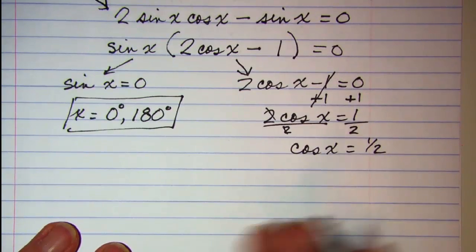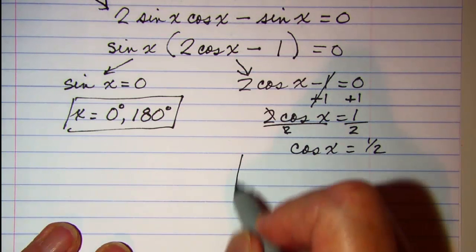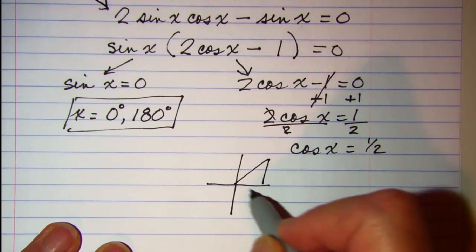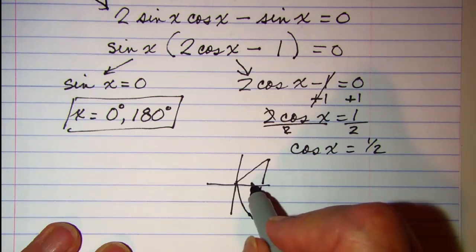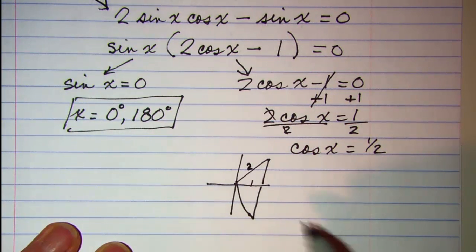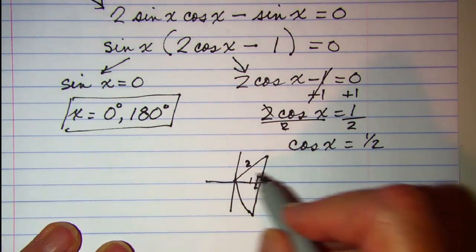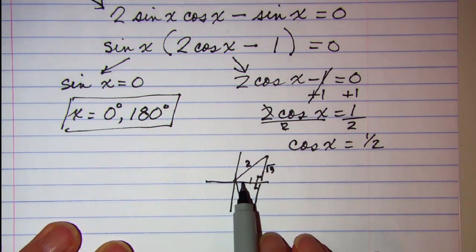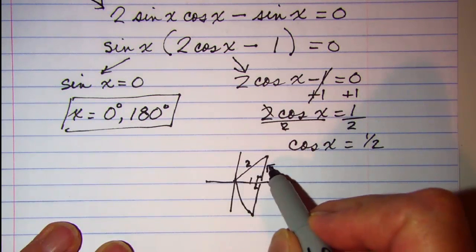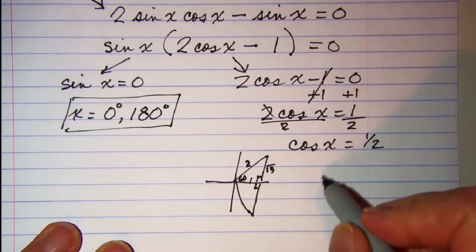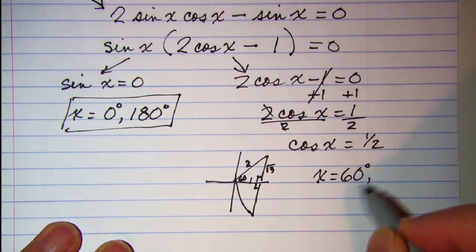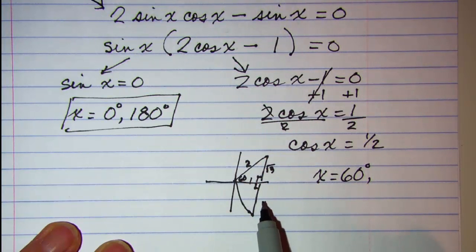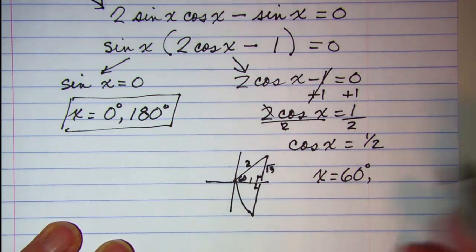And then my cos x is positive in quadrants 1 and 4. Cosine is adjacent over hypotenuse. And this looks like a 30, 60, 90 triangle. So my reference angle here is 60. So in quadrant 1 our angle is 60 degrees. And then in quadrant 4 I would go all the way around 360 and then back it up 60 degrees for this reference angle. So 300.